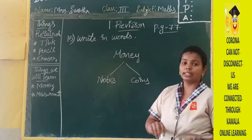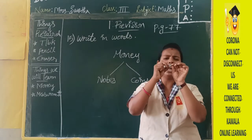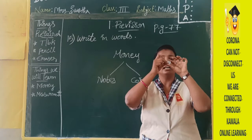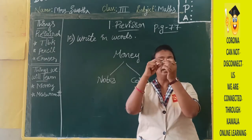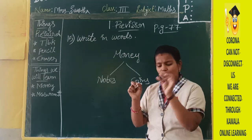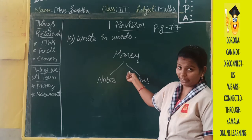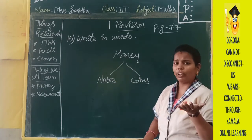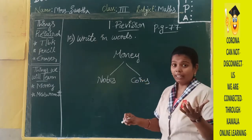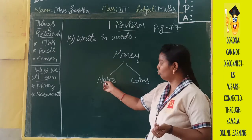Now about coins — see how these coins are. This coin is very hard. If you make a sound with it, you can hear it. Coins are very hard things and the material used is iron or steel. It cannot be folded. Coins are a little heavier compared to notes.